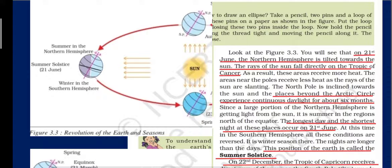The North Pole is tilted towards the sun, and all places beyond the Arctic Circle will have six months of continuous daylight. As you can see in the image, the Arctic Circle is receiving rays of the sun. The northern hemisphere is receiving sunlight, so it will have summer season, and all places north of the equator will have summer season at this time.